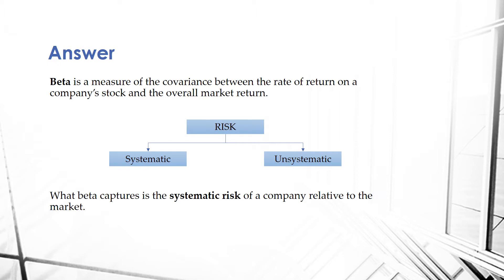The best way to understand what beta is, is to first understand what risk is. Risk can be divided into two segments: systematic and unsystematic risk. Systematic risk refers to market-wide risk that affects all companies, whereas unsystematic risk, or company-specific risk, is something that affects only one company — maybe an internal issue, underperformance, or a random event that only impacts that one company.